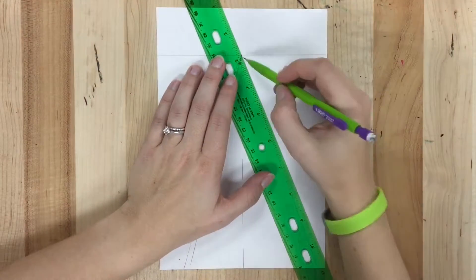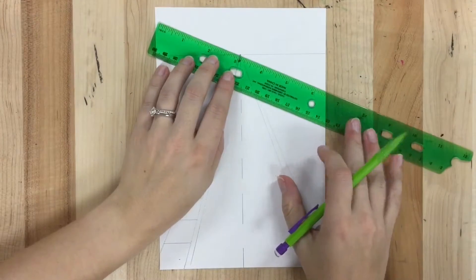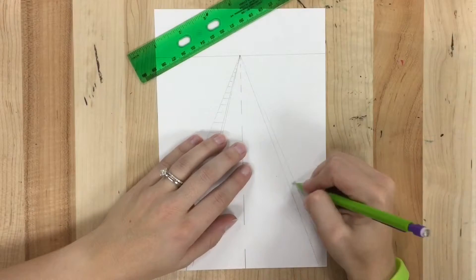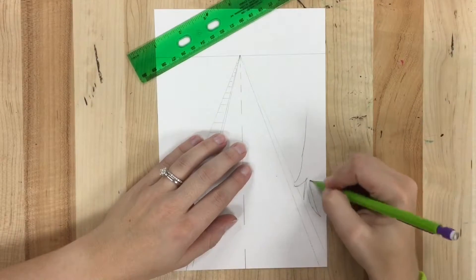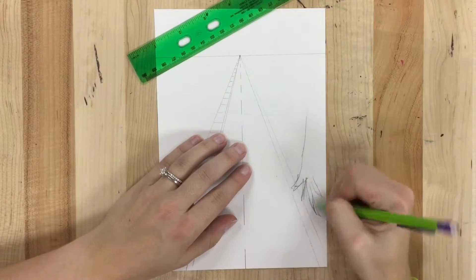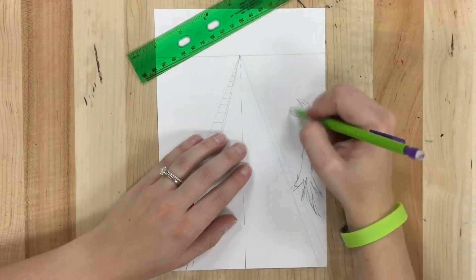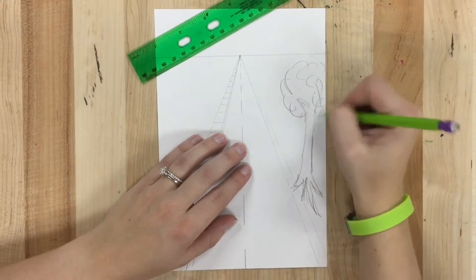Next I'm going to do a row of trees, like along the edge of the road. So I'm putting in one little guideline towards the bottom next to my road. And then I'm going to draw in my one tree that's closest to me so that I know how tall I want to make my trees.